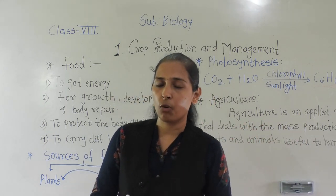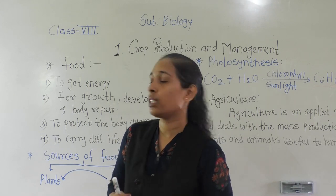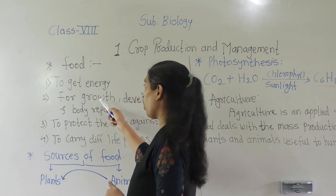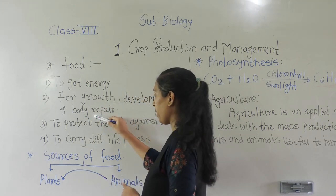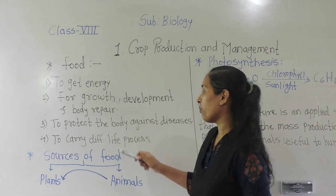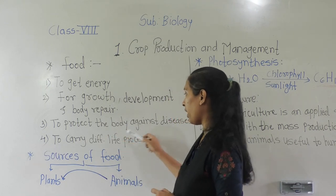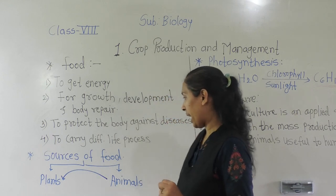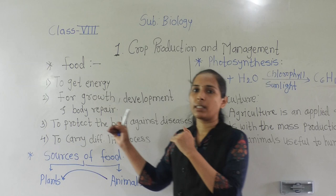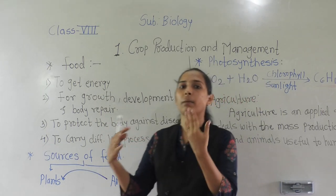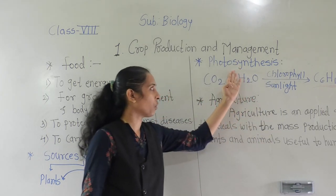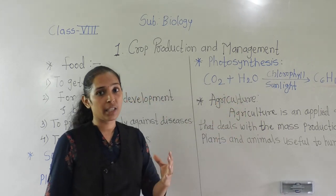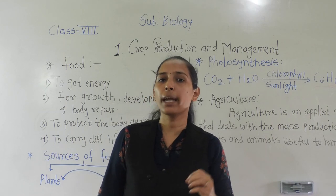Let's revise what we have discussed: we need food for different reasons — to get energy, for growth, development, and body health. Food also helps to protect the body and carry out different life processes. The two main sources of food are plants and animals. Plants are called autotrophs, animals are called heterotrophs. Plants make their own food through the photosynthesis process. We also saw the definition of agriculture and how the agriculture term was born.